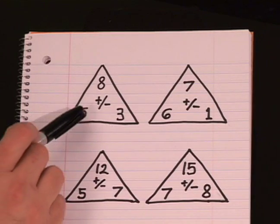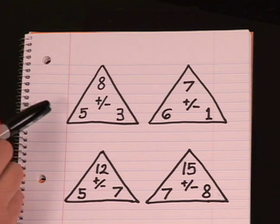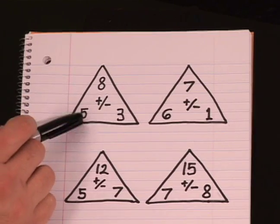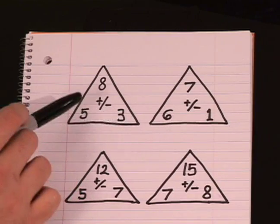Once they have memorized 5 plus 3 equals 8, then they can easily say that means 8 minus 5 equals 3 and 8 minus 3 equals 5.